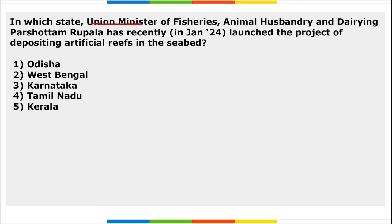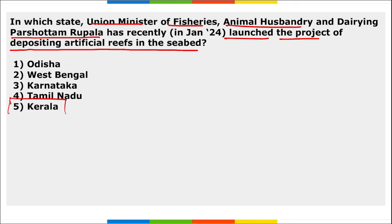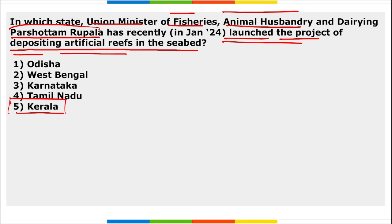Union Minister of Fisheries, Animal Husbandry and Dairying Purushottam Rupala recently launched the project of depositing artificial reefs in the seabed in Kerala. The project aims to increase the income of fishermen by enhancing the fish population in the waters of Kerala.